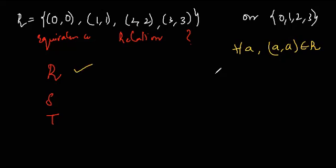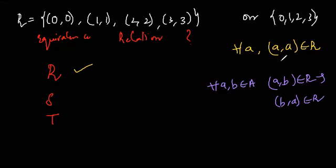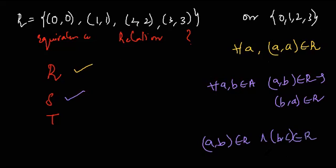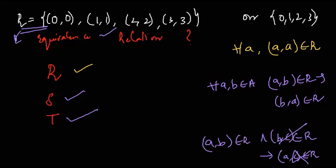For symmetric: if (A, B) belongs to R, then (B, A) should also belong to R. Since we have only pairs like (0,0), (1,1), (2,2), (3,3), the reverse of each is the same pair, so it is symmetric. For transitive: (A, B) belongs to R and (B, C) belongs to R, then (A, C) should belong to R. Since we don't have any (B, C) pair where B ≠ C, we don't need to check for (A, C). That means it is transitive also. So this relation R is an equivalence relation.